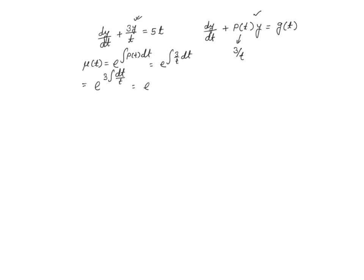That is going to be equal to e to the power 3 integral dt over t, that is e to the power 3 ln of t, because integral of dt over t is ln of t, that is the same as e to the power ln of t cubed. And I have used this property here: a ln x equals ln x to the power a.